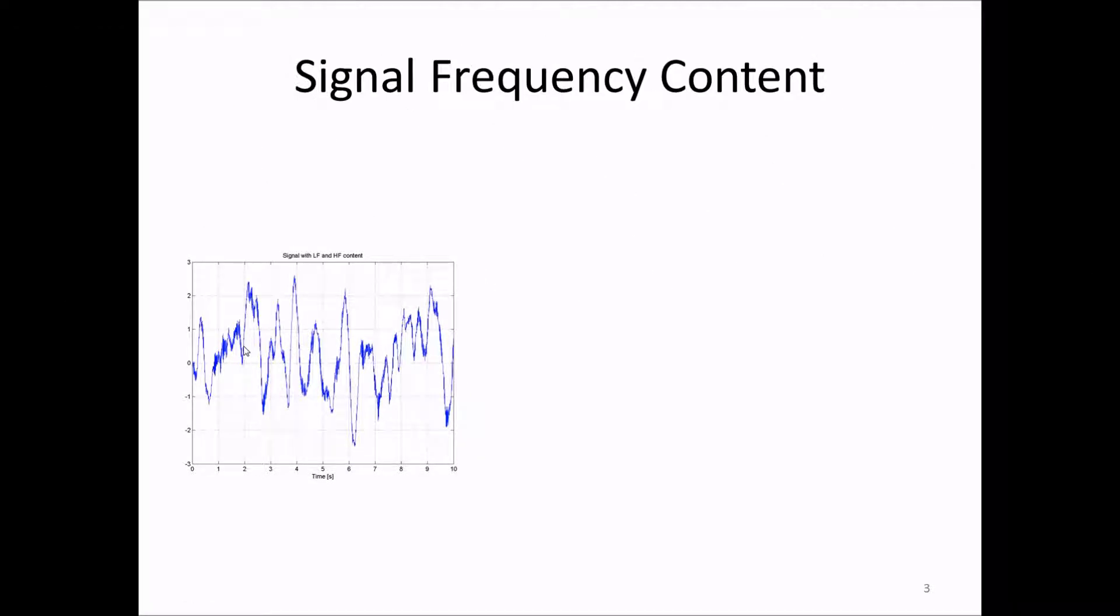This could for example be the acceleration variation of a high rise building due to a wind load. That would be the slow variations here. And then the high frequency content could either be noise from the sensors or it could be some higher frequency content from higher order modes.